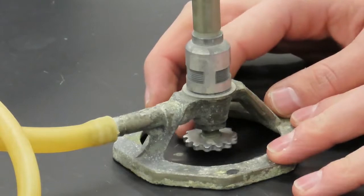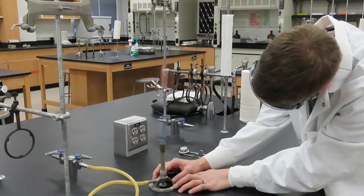Alternatively, you can increase the height of the flame by turning the gas valve in the direction to open it.